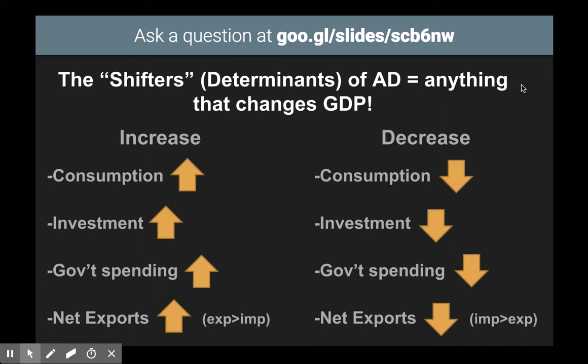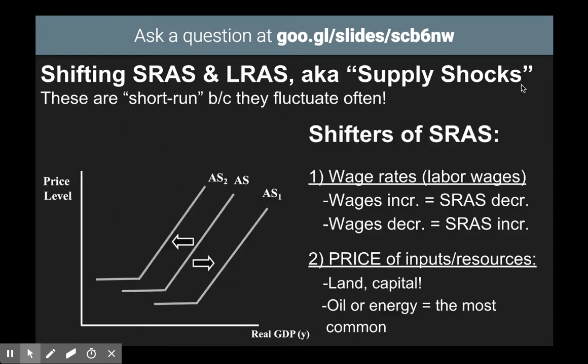We're going to jump right into a recap of the shifters of aggregate demand. Anything that would shift or change GDP, either increase or decrease — CIG or XN — is going to shift aggregate demand. Any time in economics, on any graph, an increase is represented by a shift to the right, and a decrease is represented by a shift to the left. I'll show a shift in AD a bit later, but for now let's jump into aggregate supply. If you want to look back at AD, take a look at your notes from before break.